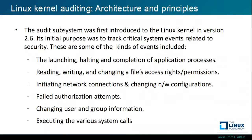The audit subsystem was first introduced in Linux kernel version 2.6, and its initial purpose was to track critical system events related to security. These are some of the events that can be audited: process creation, execution, halting, and completion; reading, writing, or changing files, access permissions and rights; tracking network connections and changes to network configuration; failed authorization attempts; changes to user and group information; and execution of various system calls.